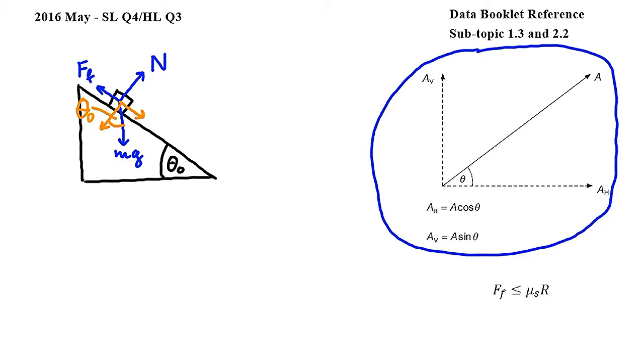Connecting the diagram from the data booklet to our drawing, we can see that this component of mg is equal to mg times cos theta 0. Hence, n is equal to mg cos theta 0.